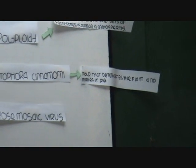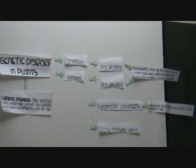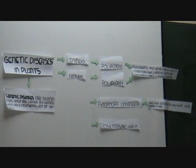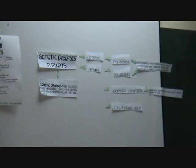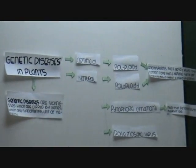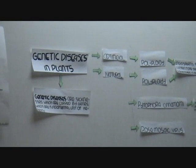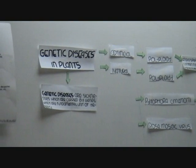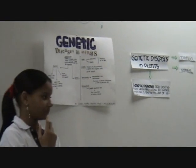Can you tell me what artificial mutation is? You can cause a disease artificially — when they inject something into the plant.